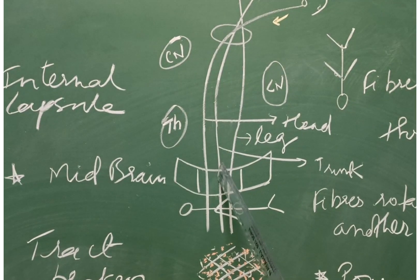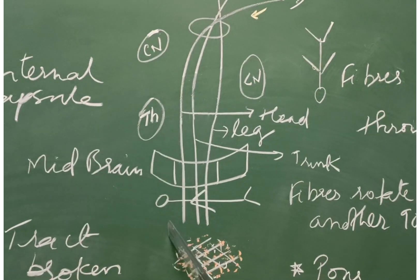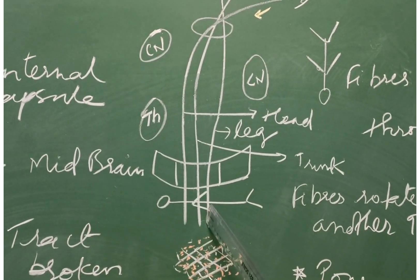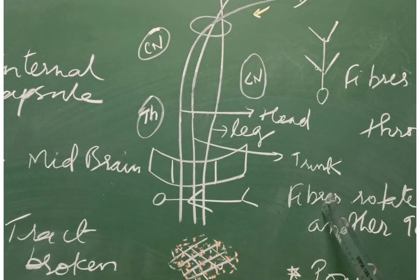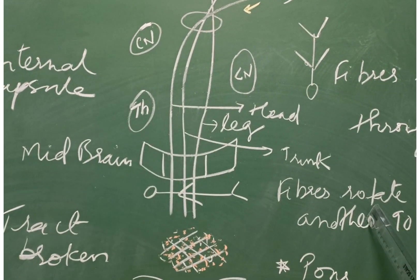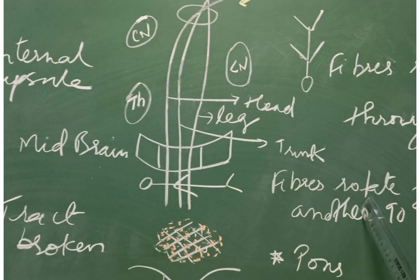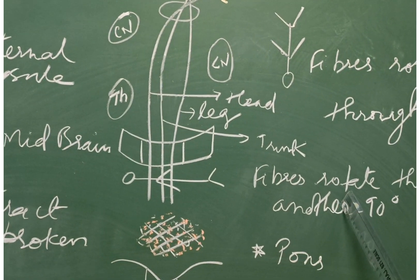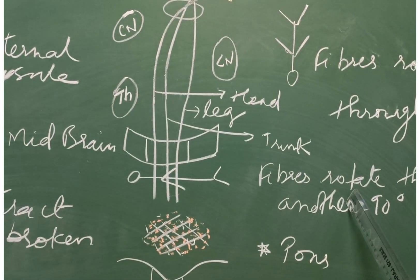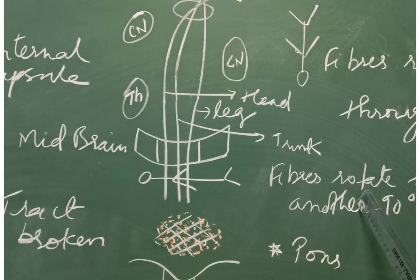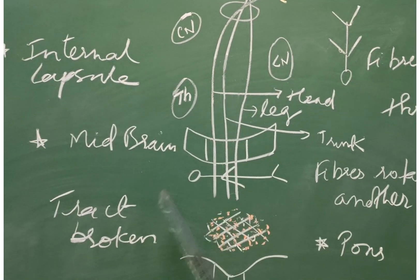Then these fibers descend to the midbrain and occupy middle three-fifths of the crux cerebri. While reaching here, they have again a turn through another right angle so that the head fibers now come medially and leg fibers lie laterally, while trunk fibers lie in the media.